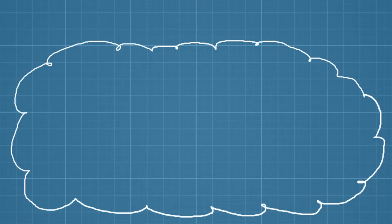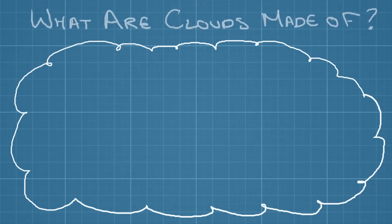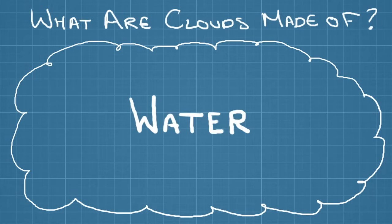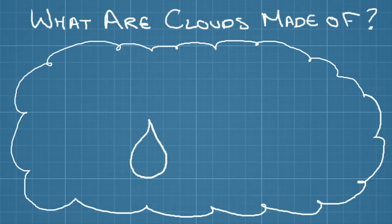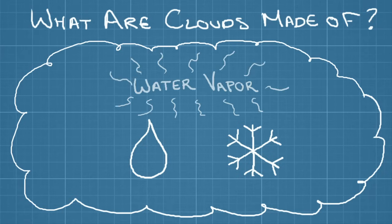But what exactly are clouds and how do they form? All clouds share the same basic ingredient: water. They're made up of water droplets or ice crystals that have formed from water vapor in the atmosphere.